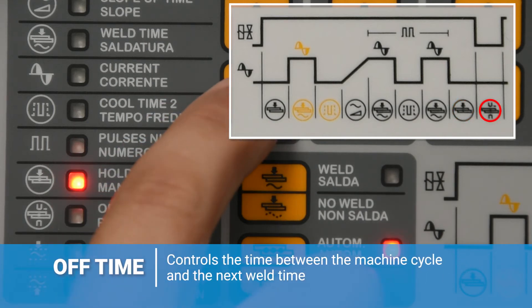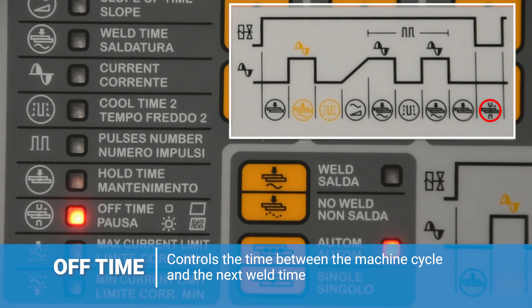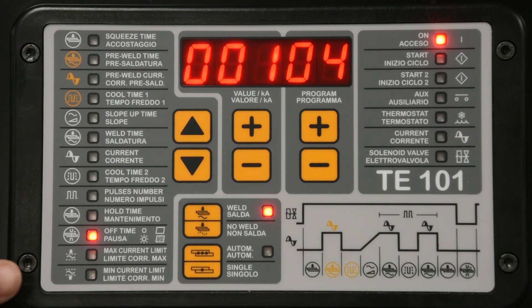Next is the off time. This is used in automated welding and controls the time between the machine cycle and the next weld time. This can be set between 1 and 99 cycles. The final two parameters, the maximum current limit and the minimum current limit, can be set between 0 and 56 kiloamps and will generate an error if the welder sees a current value exceeding these thresholds. When set to 0, these functions are off.